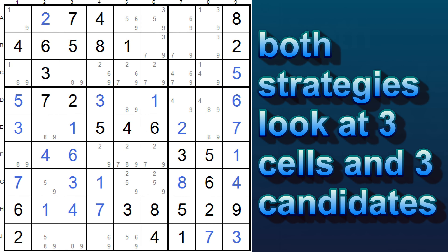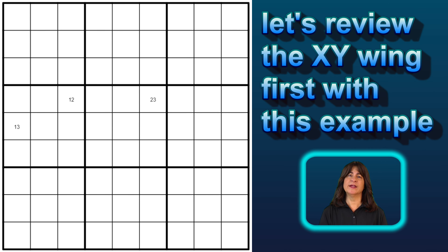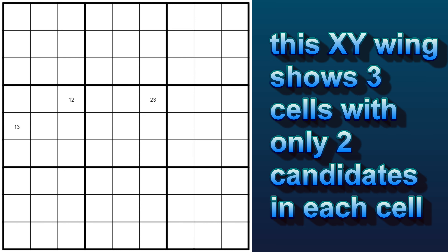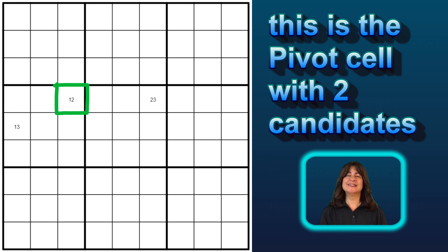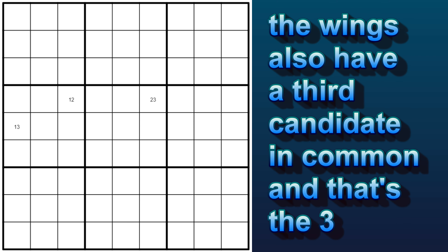We are still looking at three cells with three candidates, but now the pivot has three candidates instead of just two. Let's look at this example of an XY wing. You can see three cells, but they only have two candidates each. The pivot cell is this one with the one and two candidates — let's call them X and Y — and then the wings, or pincers, are these two cells, and one of them has the X value and the other has the Y value, but they both also have a third candidate.